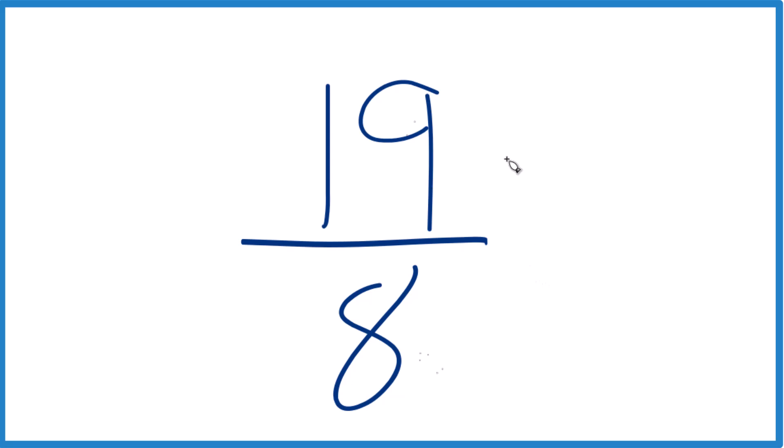But the only whole number that goes into 19 and 8 is 1. So you divide 19 by 1, divide 8 by 1, you get 19 eighths.